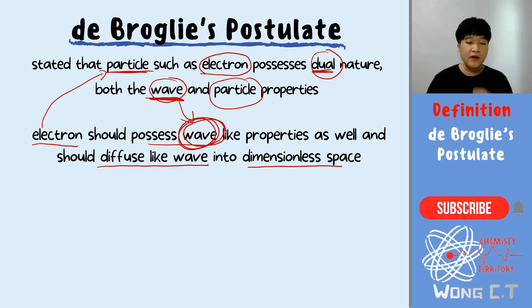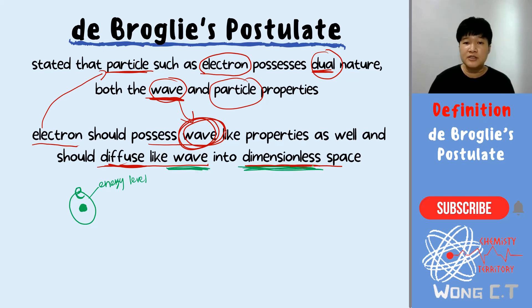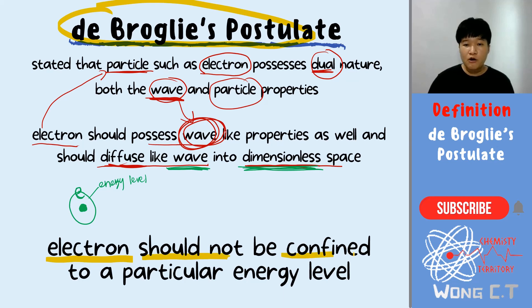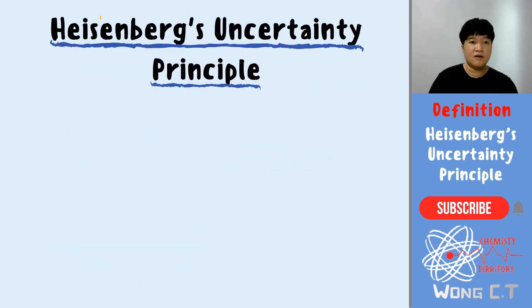However, in the Bohr atomic model, Bohr stated that the electron is located at a specific and fixed energy level. So how can the electron be at this specific energy level when it should behave like a wave and move into dimensionless space? Therefore, the weakness pointed out by de Broglie is that the electron should not be confined to a particular energy level — if the electron behaves like a wave and moves into dimensionless space, it cannot sit on a specific energy level.